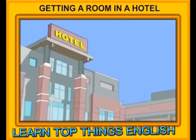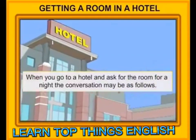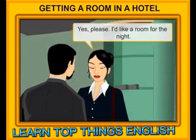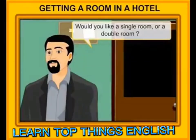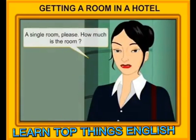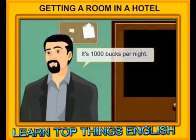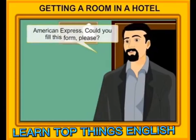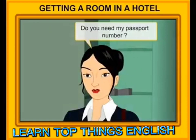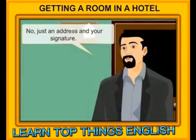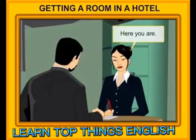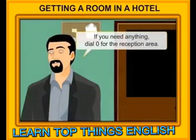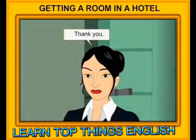Getting a room in a hotel. Good evening. Can I help you? Yes, please. I'd like a room for the night. Would you like a single or a double room? A single room, please. How much is the room? It's 1,000 bucks per night. Can I pay by credit card? Certainly. We take Visa, MasterCard, and American Express. Could you fill this form, please? Do you need my passport number? No, just an address and your signature. Here you are. Here's your key. Your room number is 324. If you need anything, dial 0 for the reception area. Thank you. Have a good stay.